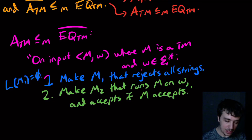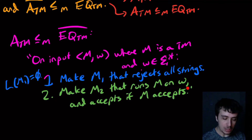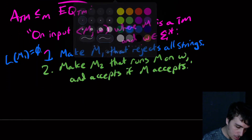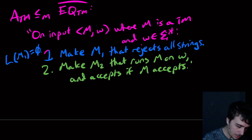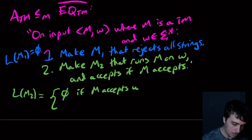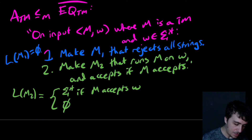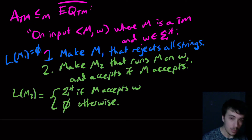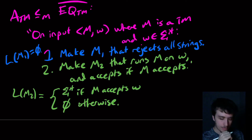M1's language is empty by definition. M2 can receive any input independent of M and w. If M accepts w, then M2 will accept everything. If M does not accept w, M2 accepts nothing. So L(M2) is either Σ* if M accepts w, or the empty set otherwise.